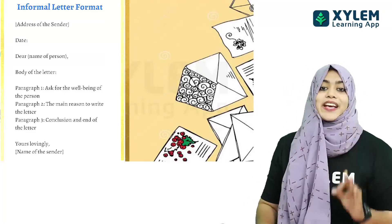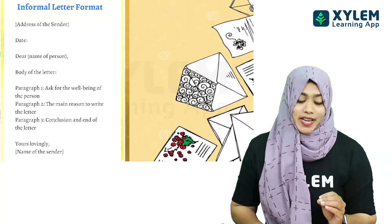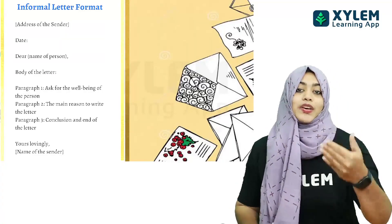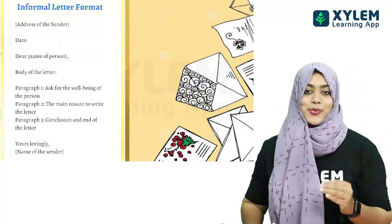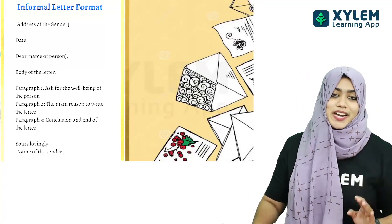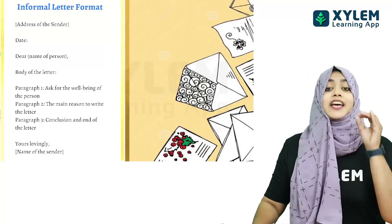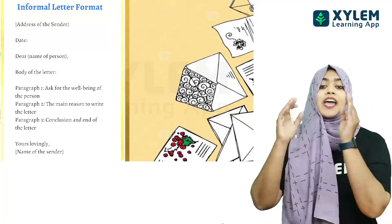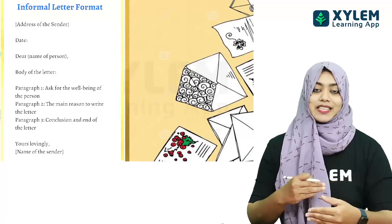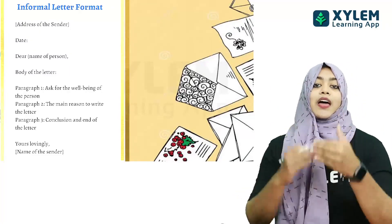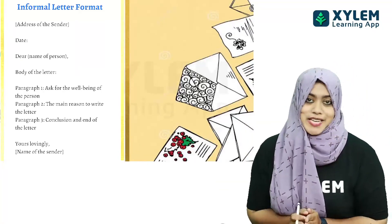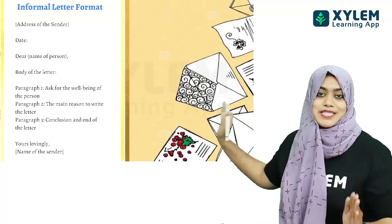In paragraph 1, we are going to ask for the well-being of the person — we ask for their entire state in the first paragraph. The second paragraph is the most important reason to write the letter — the purpose of writing the letter. That is what we write in the second paragraph.